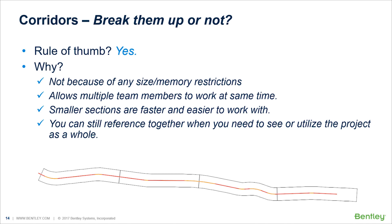The same question applies to corridors — do you want to break them up? Pretty much the answer is yes. For a small two-city-block job with only a couple of plan sheets, one corridor will probably suffice. But as a rule of thumb, you'll want to break up your corridors to allow multiple people to work on them. It's not because of size or memory restrictions — smaller sections simply run faster and are easier to work with. You can still reference everything together when you need to see the entire project as a whole.